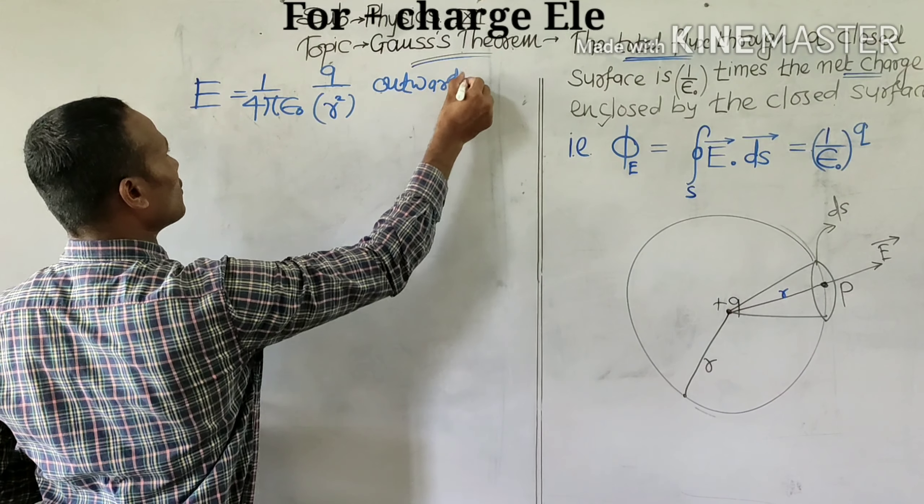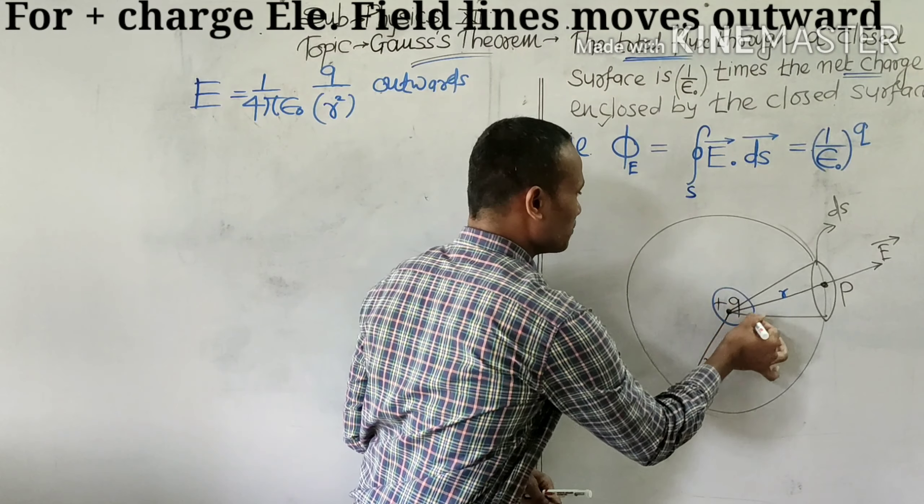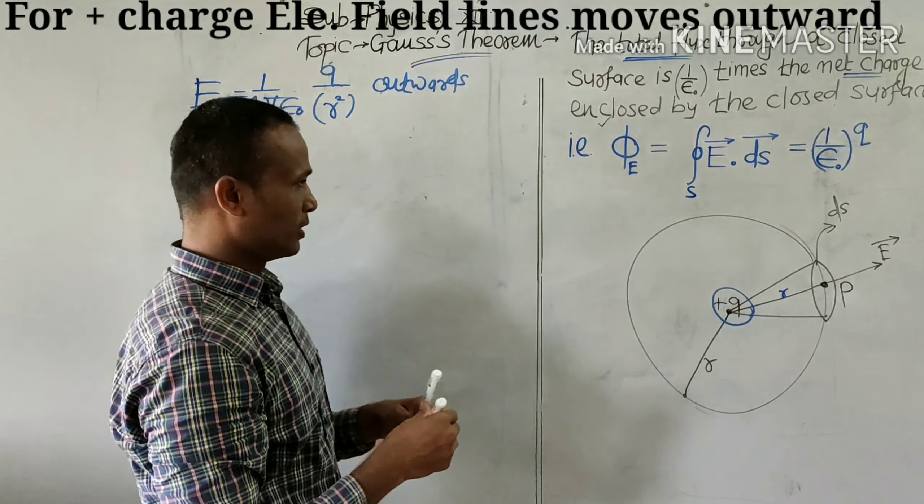Why outward? Because for positive charge, field lines move radially outward.